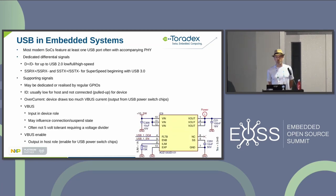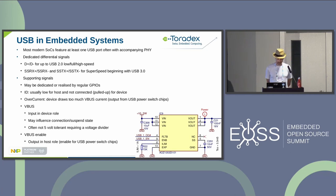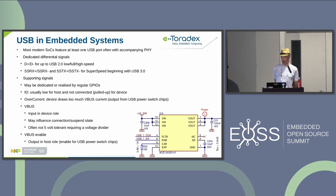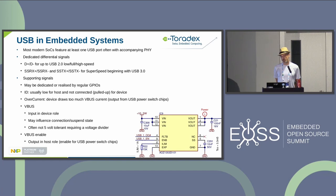Most modern SoCs feature at least one USB port, often with a companion PHY. For signals, there are usually dedicated differential pairs: D+ and D- for USB 2.0 low, full, or high speed, and on super speed there are separate receive and transmit differential pairs.